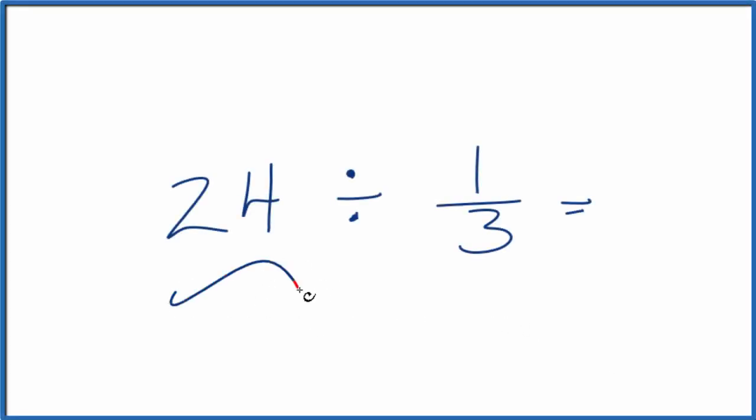Let's take a look at how we can divide 24 by 1/3. So we're trying to divide 24 by the fraction 1/3. There are a few ways to do this. First, let's kind of reason it out.